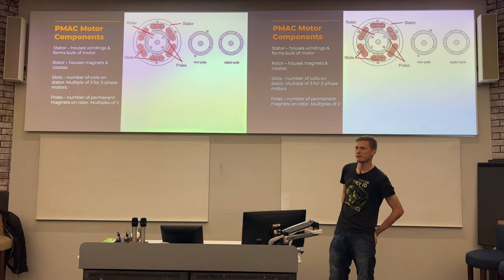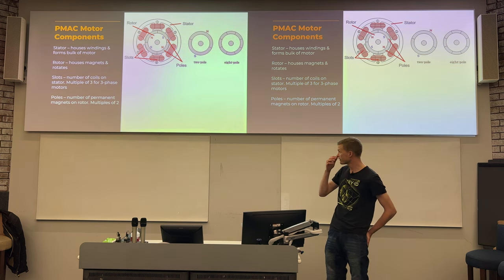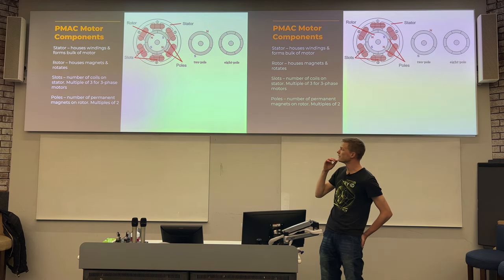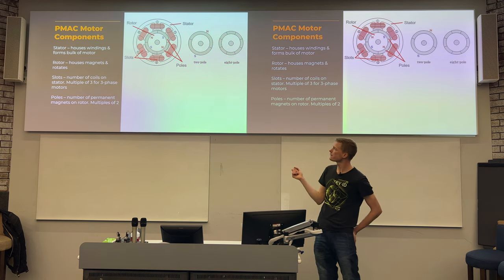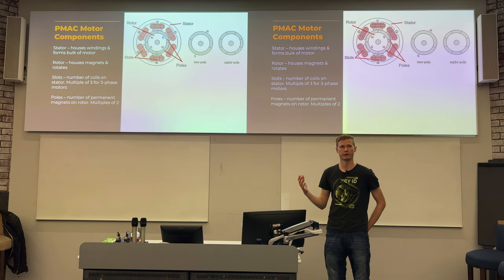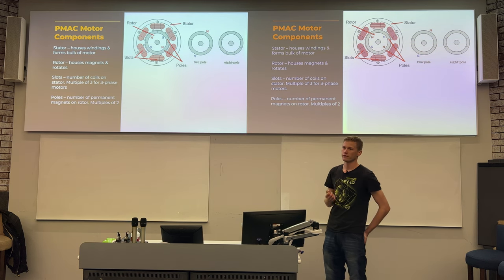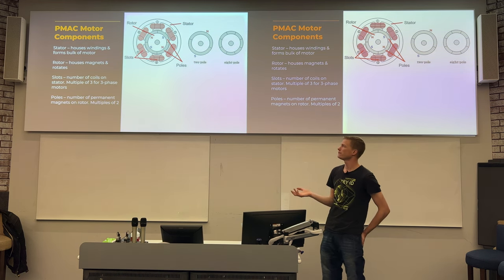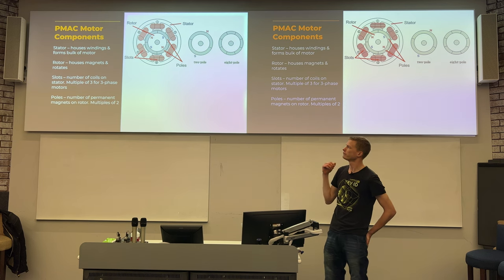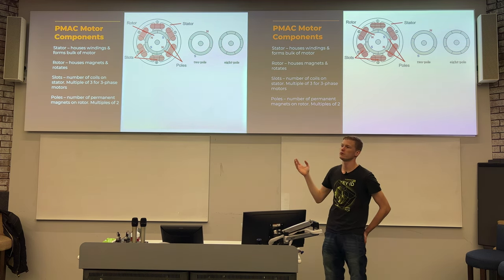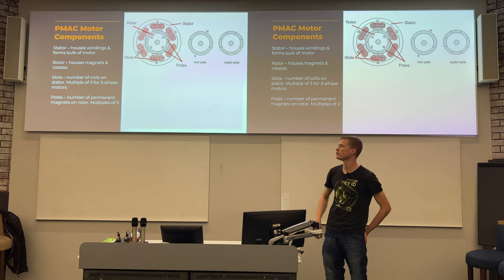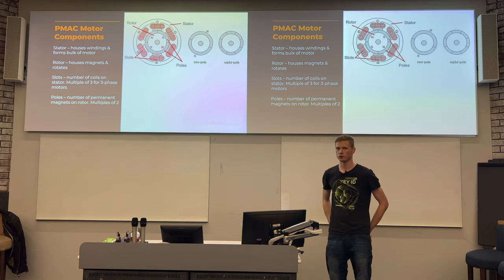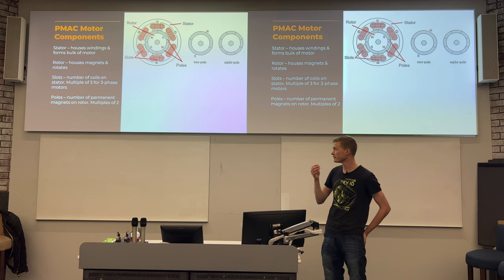So the poles always come in pairs, because obviously positive and negative attract. The coils or the stator are always multiples of three. If you set out to make your motor, you probably don't want to just have six slots and two poles — you want to have a combination of a number of them, because more poles and more slots gives you different operating characteristics.